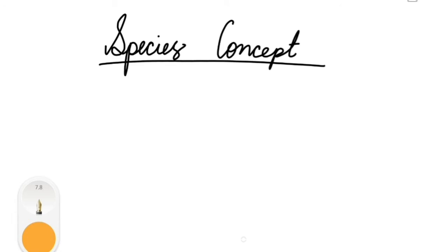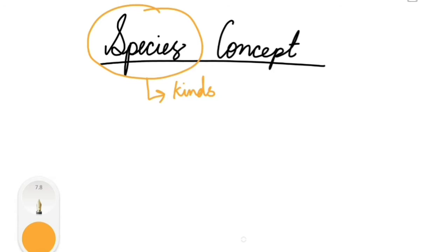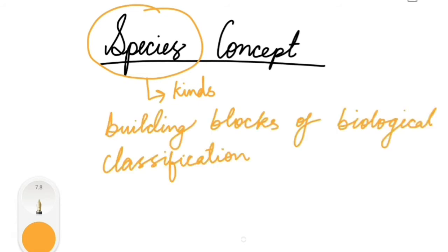The topic for today's discussion is the species concept. The word species in Latin actually means kinds or types. In biology, species can also be called a fundamental unit or the building blocks of biological classification. Numerous definitions have been proposed, which is why species is also considered a concept — and concepts are constructed by the human mind.